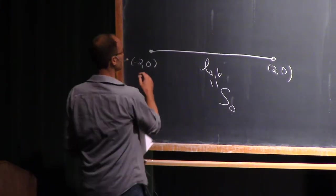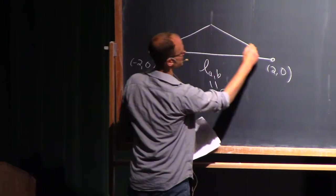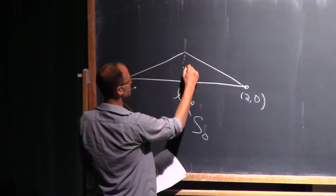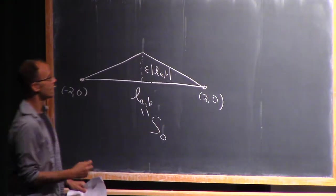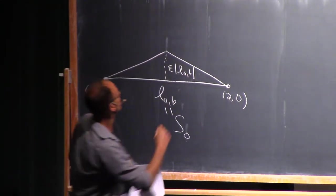And then what we did was that we started making new examples by coming out to isosceles triangles, moving out some epsilon times the length in this direction, and continuing this process to get our S's.